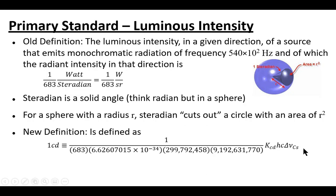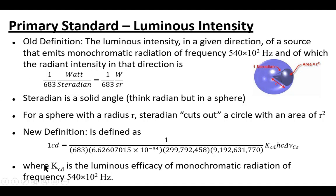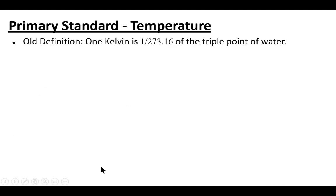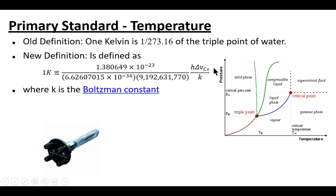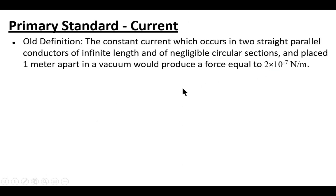The candela is about the amount of light that hits the surface of a sphere. There's the same set of constants - h, c, and delta-v - and now we have the kcd with a certain frequency of luminous monochromatic, meaning one-color, radiation. Temperature was based on the triple point of water; the new definition is based on the Boltzmann constant. Current is interesting - electrical current is actually based on a force measurement.